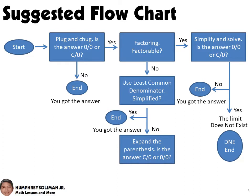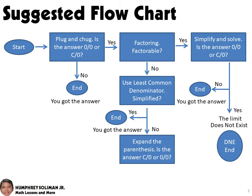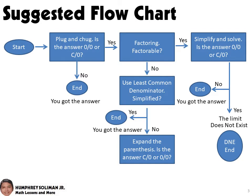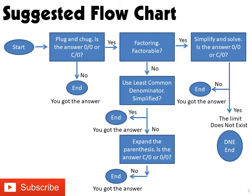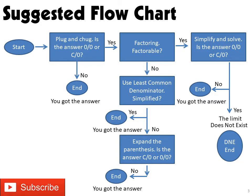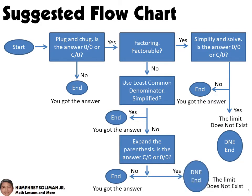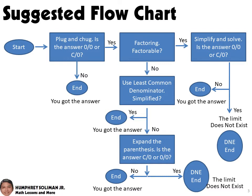But if the result is a constant over 0 or a 0 over 0, we need to take another option to solve for the limit. One more option is to expand the parenthesis and simplify. We might be able to solve the limit using plug and chug after simplifying. If the result is not a constant over 0 or a 0 over 0, that's already the answer. But if the result is a constant over 0 or a 0 over 0, we can use DNE — the limit does not exist.